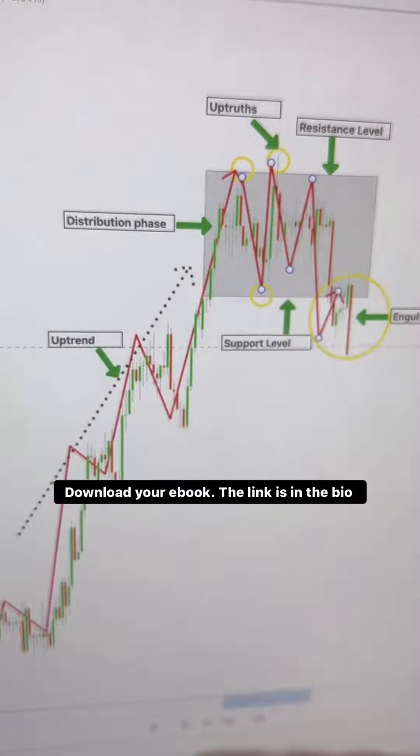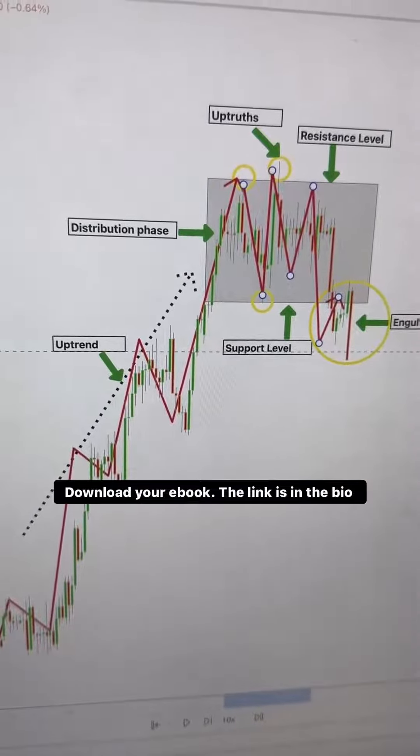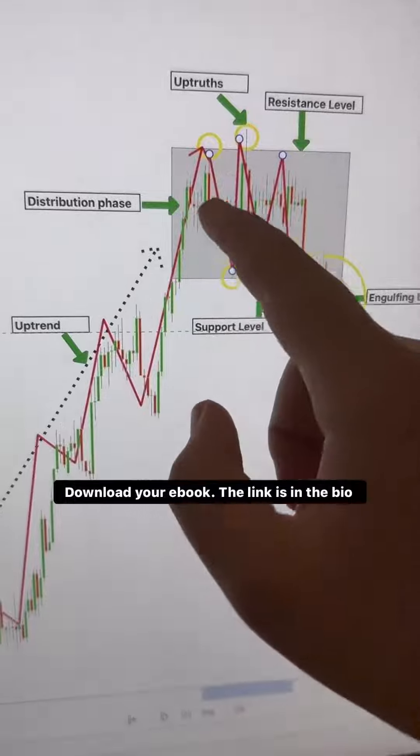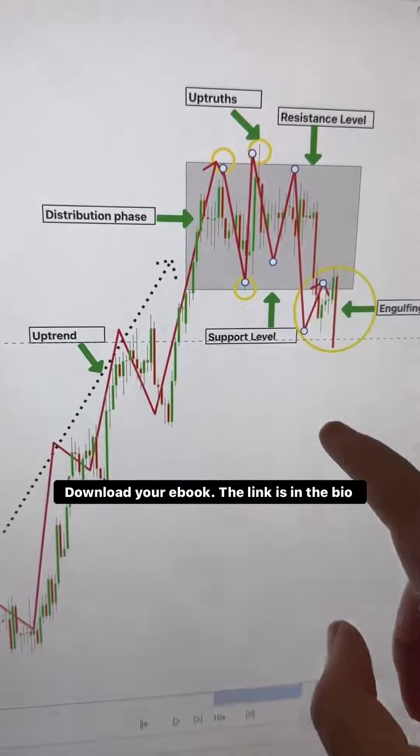It's a sneaky move faking out the resistance level and tricking new buyers into thinking the market will continue upward. However, once these new buyers enter the market, the price suddenly closes within the range and the banks start pushing down.